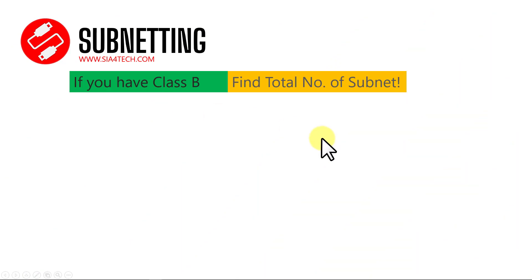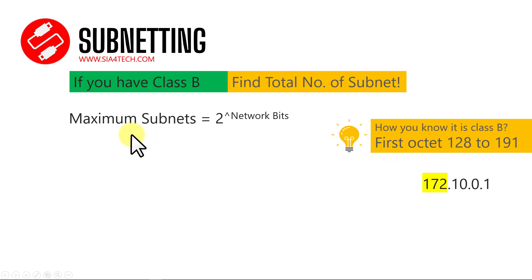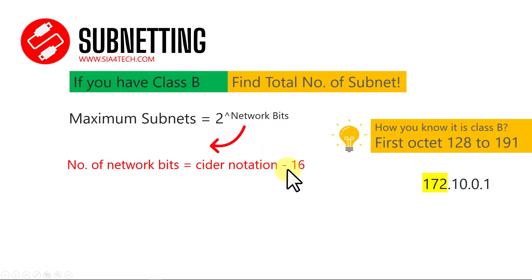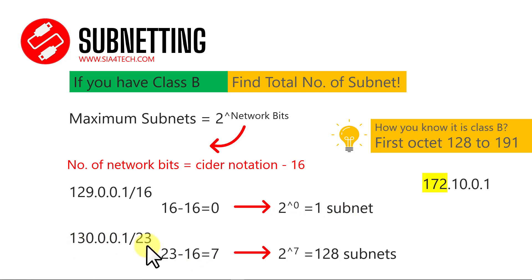For Class B, the first octet is between 128 and 191. The formula is: maximum subnets = 2 to the power of (CIDR minus 16). For example, CIDR /16 minus 16 equals 0, so 2 to the power of 0 equals 1 subnet. Another example: 130.x.x.x is Class B (between 128 and 191) with CIDR /23 — 23 minus 16 equals 7, so 2 to the power of 7 equals 128 subnets.